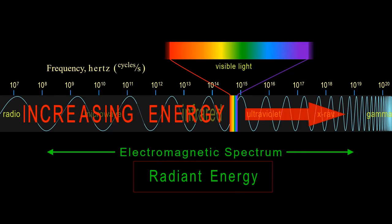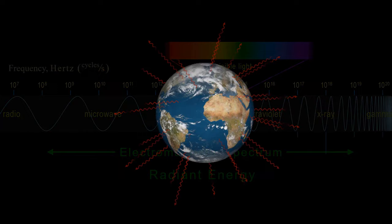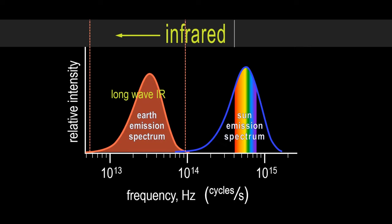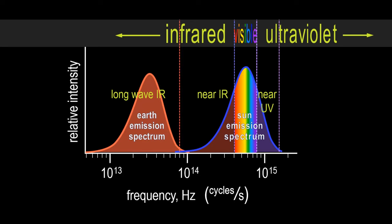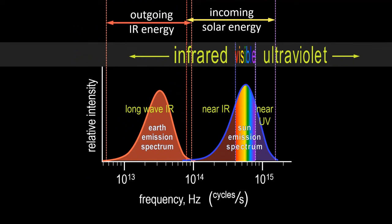The entire Earth and everything on it are in a temperature range that constantly emits infrared energy — the Earth constantly glows in infrared light. We can set up a graph of the frequency spectrum representing the range of infrared frequencies emitted by the Earth, while the Sun, due to its higher surface temperature, emits higher energy radiation in the infrared to visible to ultraviolet range. These incoming solar and outgoing infrared emissions are both important to understanding global warming.